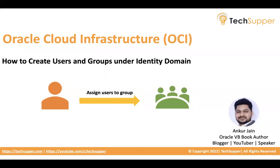Hello everybody, welcome back to the Tech Server channel. This video is part of Oracle Cloud Infrastructure where I am going to show how to create users and groups under Identity Domain in OCI. Before you give access to anybody in OCI, you have to create a user for them, assign that user into a group, and then assign policies to the group so that your user can access Oracle Cloud Infrastructure.